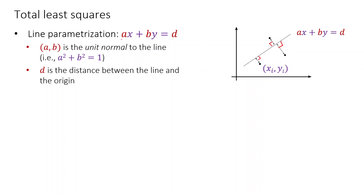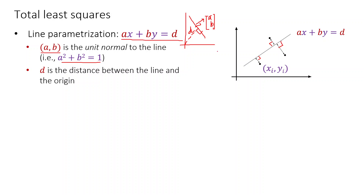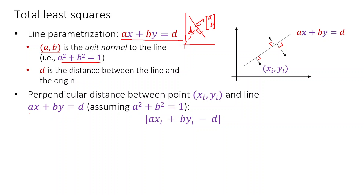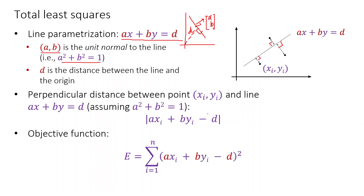Here the line parameterization is slightly different: ax + by = d, where (a, b) is a unit vector normal to the line with a² + b² = 1, and d is the distance between the line and the origin. So if we draw a line, the distance from the origin to the line is d, and any unit vector perpendicular to this line is (a, b). The perpendicular distance between point (xᵢ, yᵢ) and the line ax + by = d is |axᵢ + byᵢ − d|. We can write the objective function using this distance measure and minimize it.